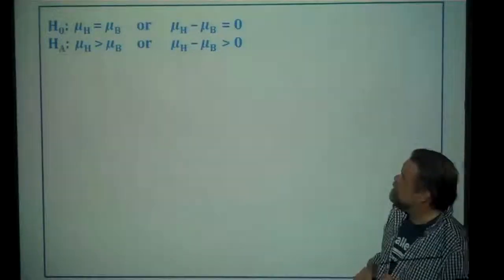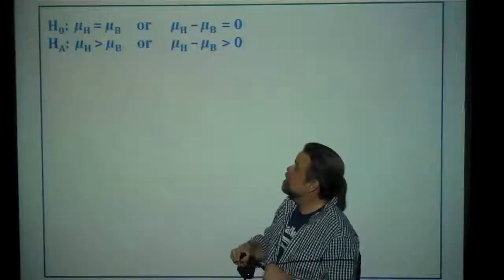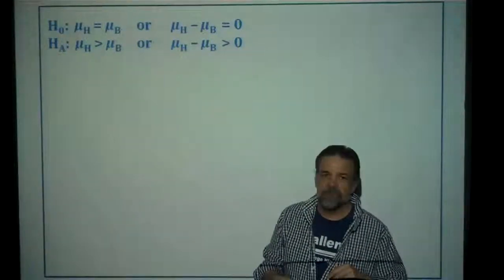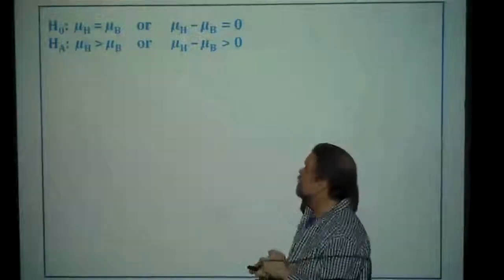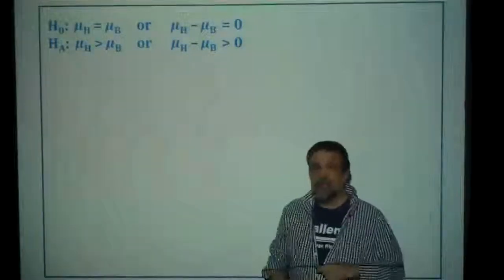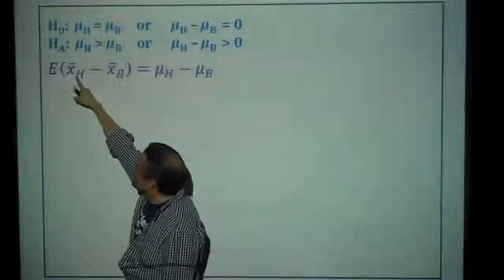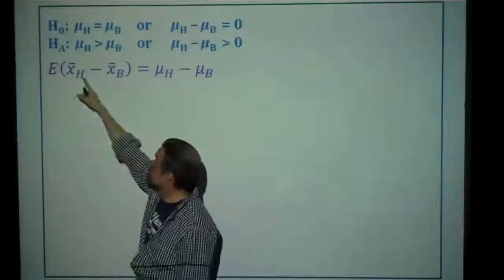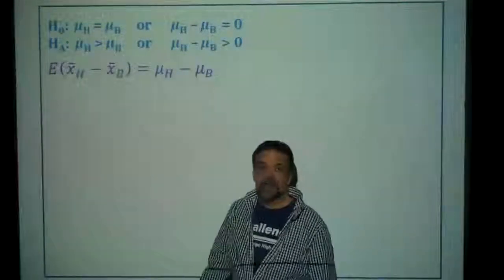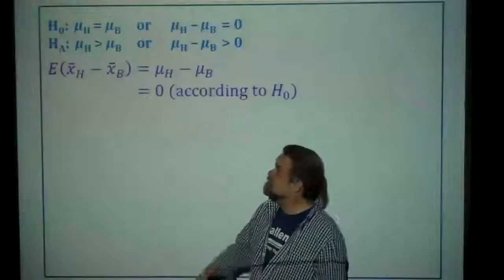Let's restate the hypotheses: the null is mu_H minus mu_B equals zero, and the alternative is mu_H minus mu_B is greater than zero. Similar to when we looked at the difference of proportions, we use x-bar_H minus x-bar_B as our estimator. If each sample mean is normally distributed, then their difference is also normally distributed, with an expected value equal to the difference of the population means — which is zero under the null hypothesis.